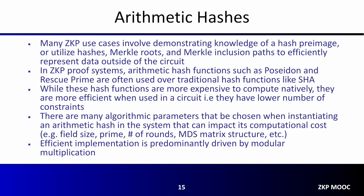The final cryptographic primitive we'll discuss are arithmetic hashes. In many zero-knowledge proof use cases, it's required that the prover demonstrate knowledge of a hash pre-image or utilize hashes, Merkle roots, and Merkle inclusion paths to efficiently represent data outside of the circuit. In ZKP systems, arithmetic hash functions like Poseidon or Rescue Prime are often used over traditional hash functions like SHA, because while they are more expensive to compute natively, they are more efficient when used inside of a circuit.